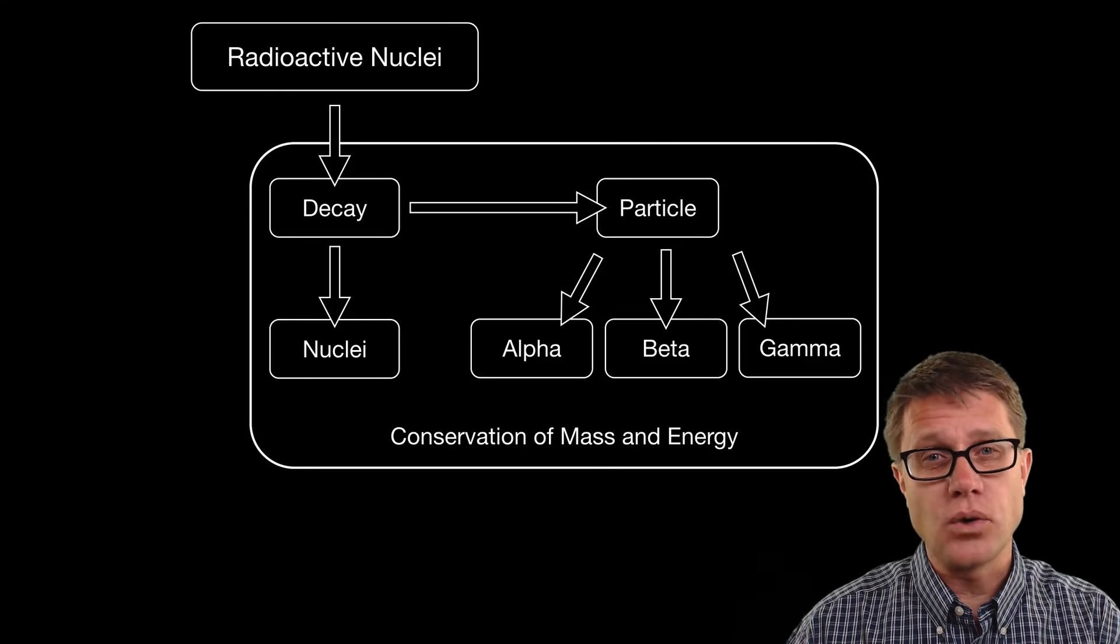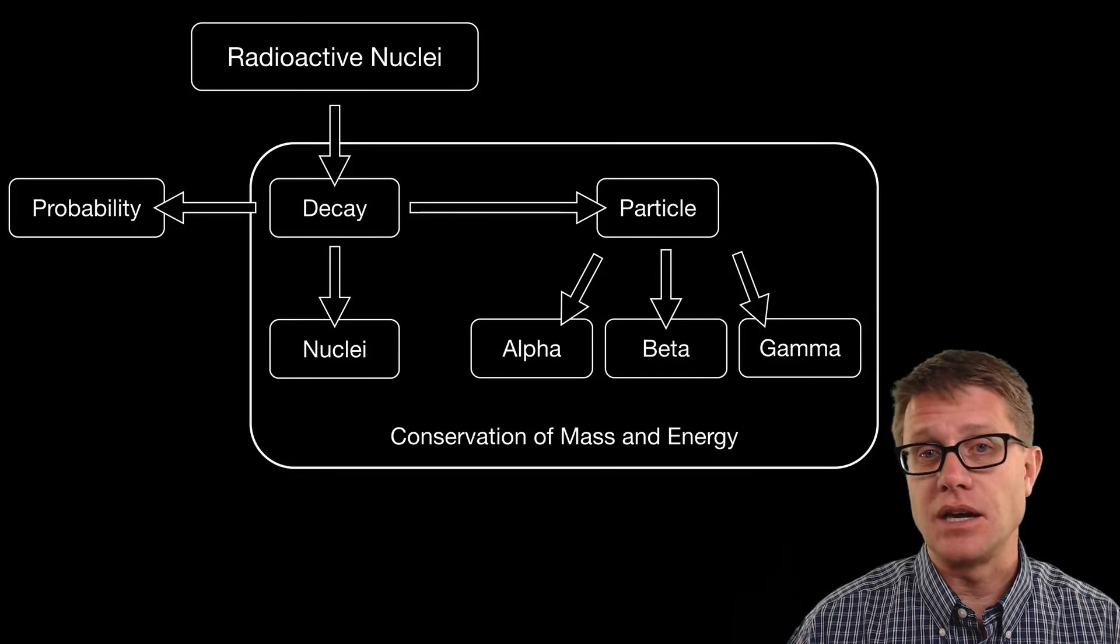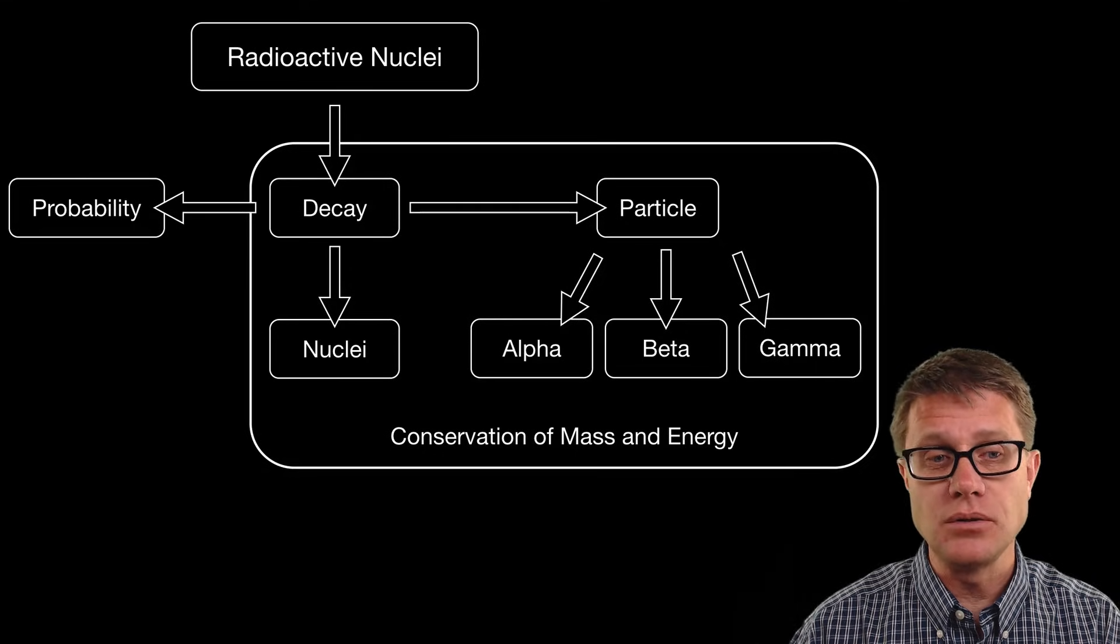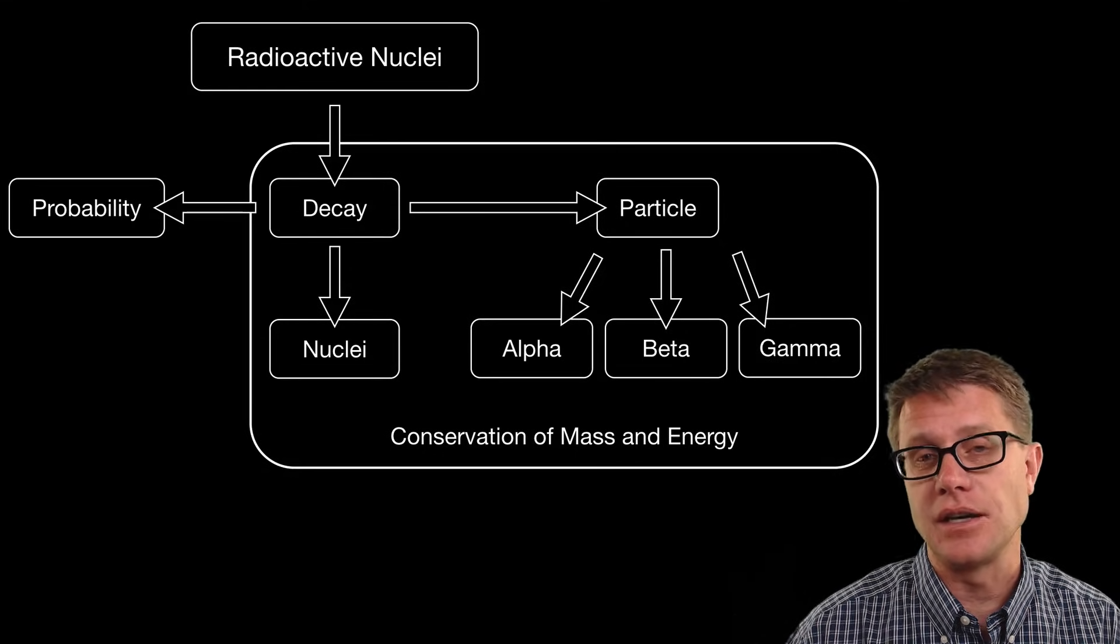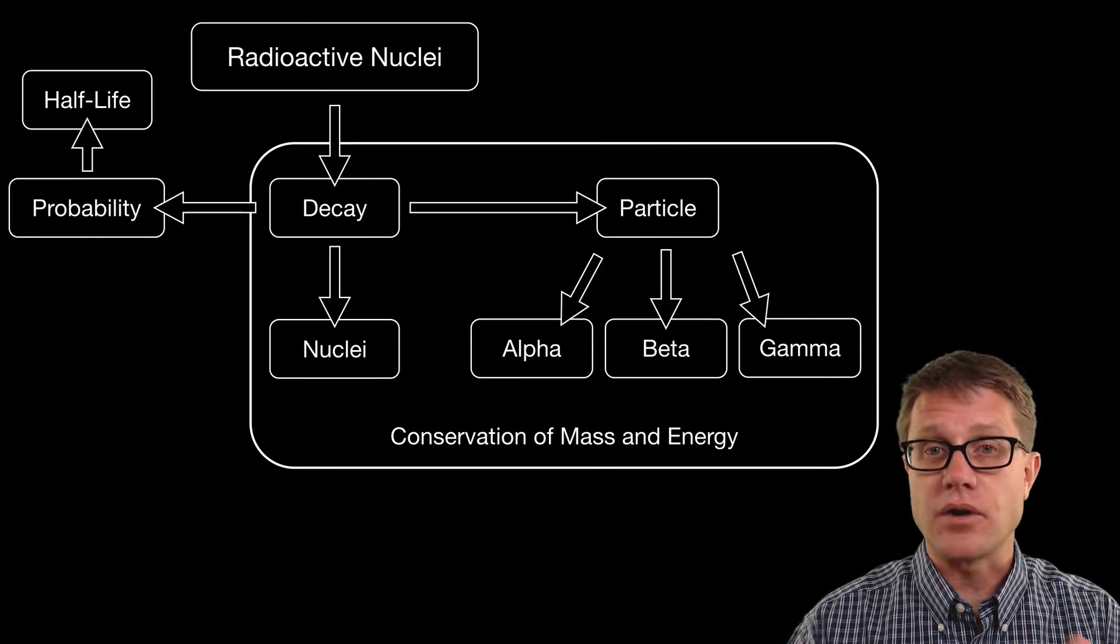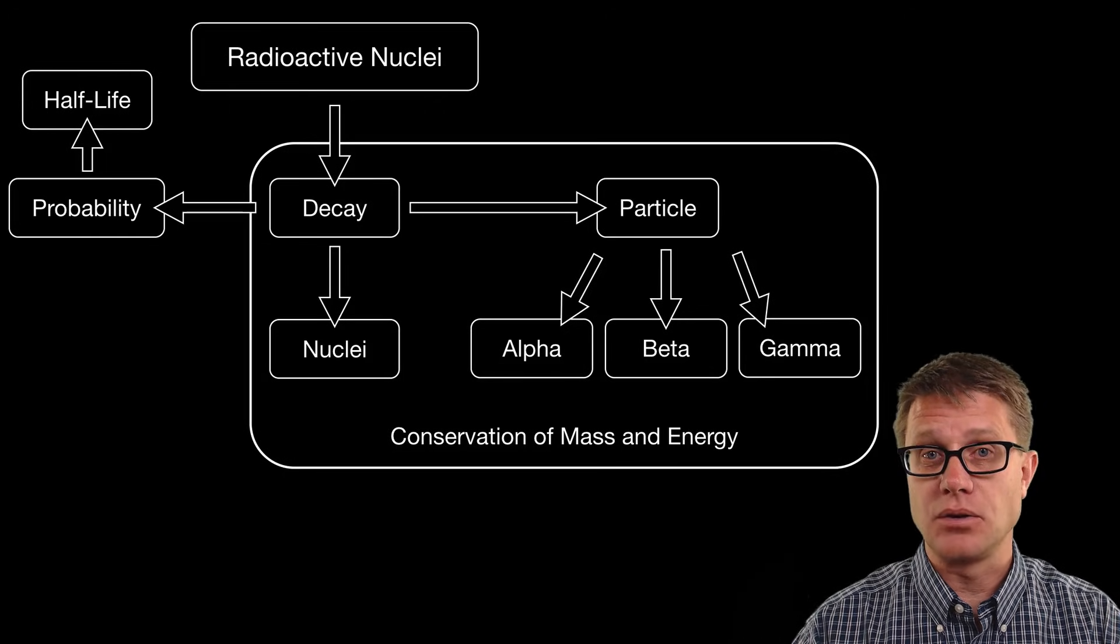What we are going to talk about here is what is the probability of that decay occurring? Well, it is chance. We never know when the next one is going to decay, but what we can use is the law of large numbers to calculate the half-life. The half-life is the amount of time it takes for half of the radioactive nuclei to decay.